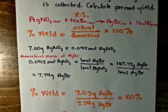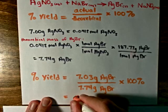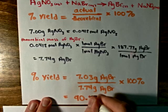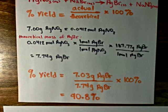Times 100%. And if we do that calculation, we end up with a value of 90.8 percent yield of silver bromide.